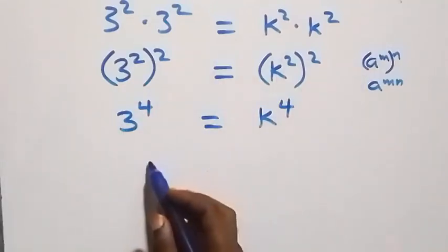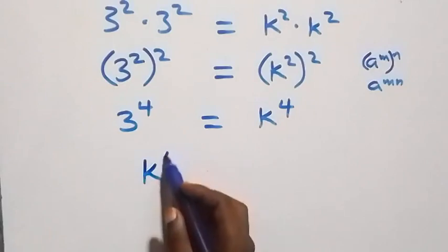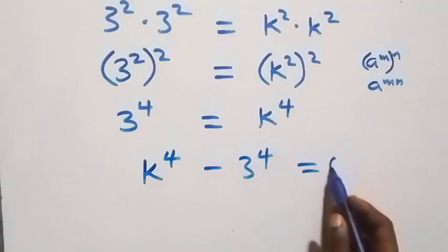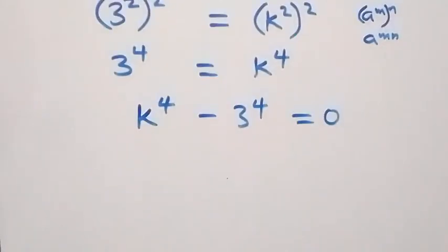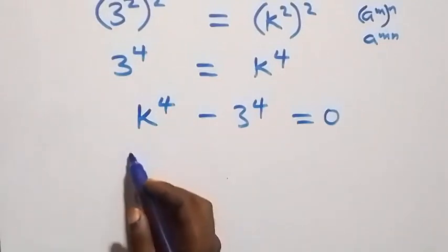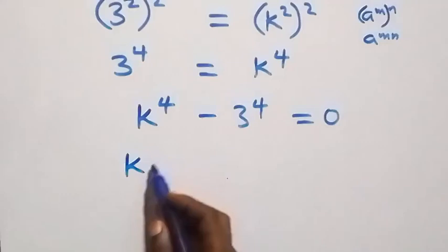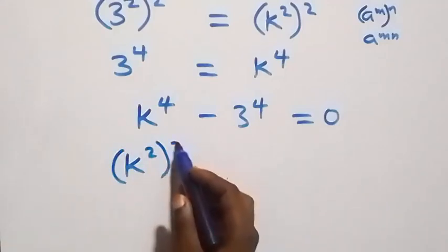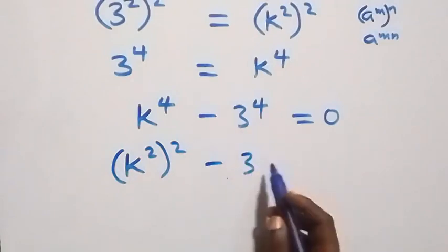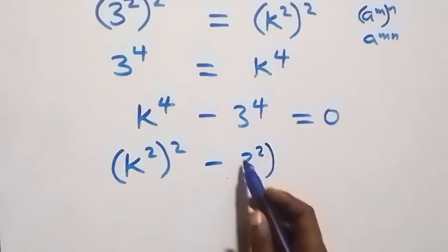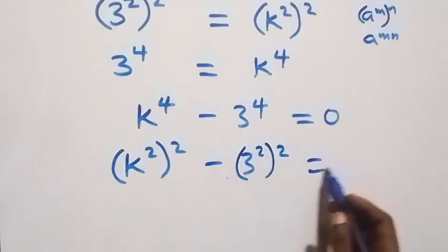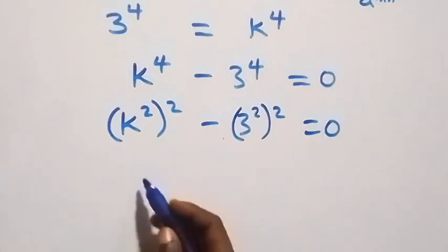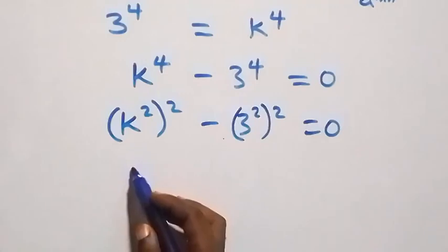Let's bring everything to one side. We take 3 raised to power 4 over and get k raised to power 4 minus 3 raised to power 4 equals zero. This can be written as k squared times k squared minus 3 squared times 3 squared equals zero.